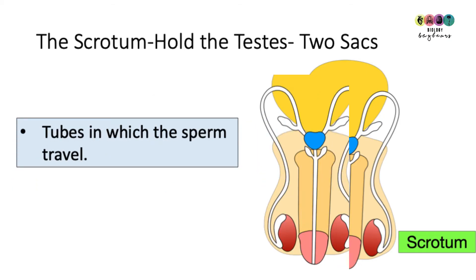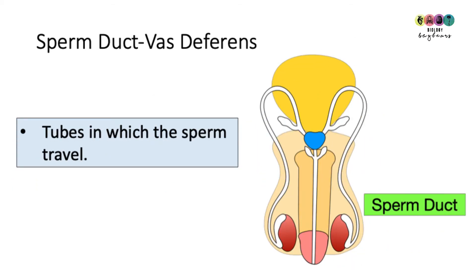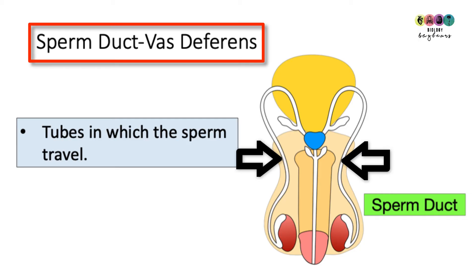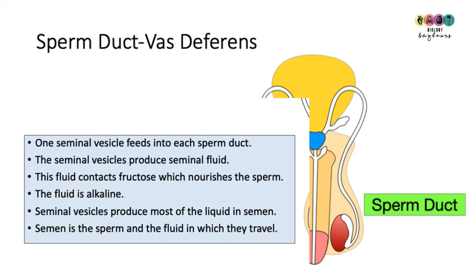When the sperm are mature they leave the epididymis and enter into two tubes, one leaving from each testis. These are known as the sperm ducts or the vas deferens, and they are basically just the tubes in which the sperm travel.